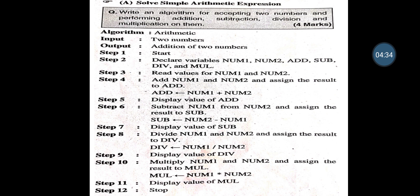Examples of Algorithm — Solve the simple arithmetic expression. Question 1: Write an algorithm for accepting two numbers and performing Addition, Subtraction, Division and Multiplication on them. Algorithm name is Arithmetic. Input is two numbers; output is Addition, Subtraction, Division and Multiplication of two numbers.